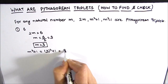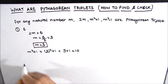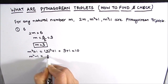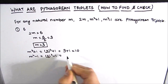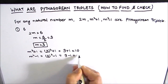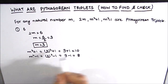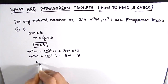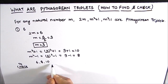Now the other two numbers will be m²+1, which equals 3²+1 = 9+1 = 10, and m²−1, which equals 3²−1 = 9−1 = 8. So the three numbers of the Pythagorean triplet are 6, 8, and 10.